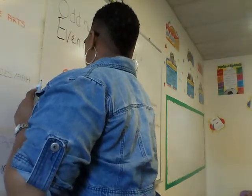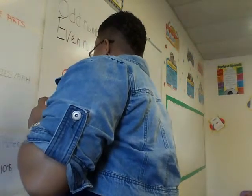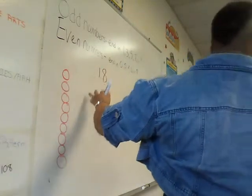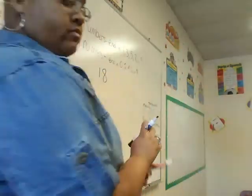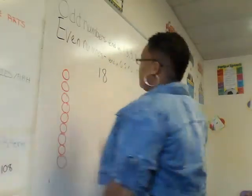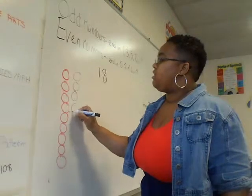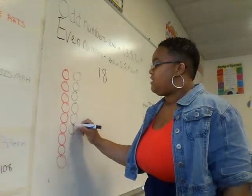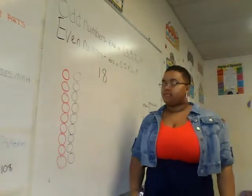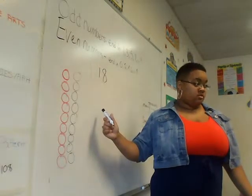One, two, three, four, five, six, seven, eight, nine. Nine girls. See our nine girls? And then we have nine boys. One, two, three, four, five, six, seven, eight, nine. So if we add these together, we should get what number? 18.